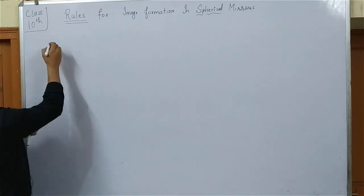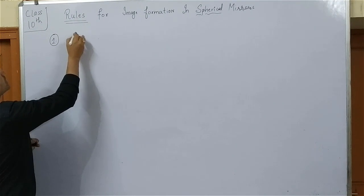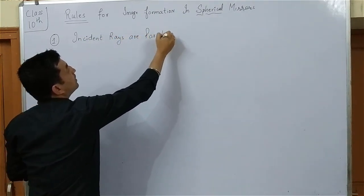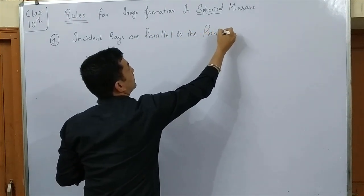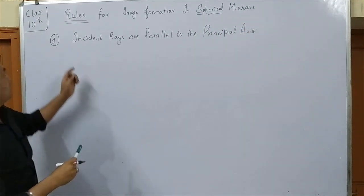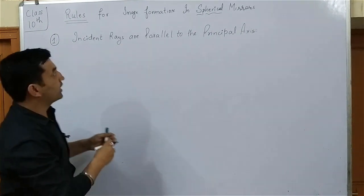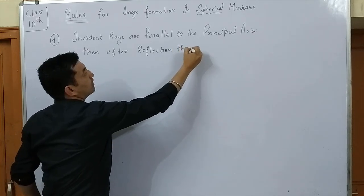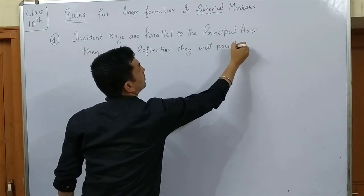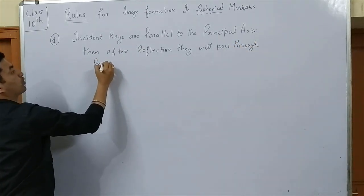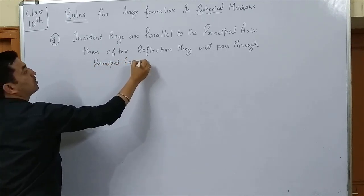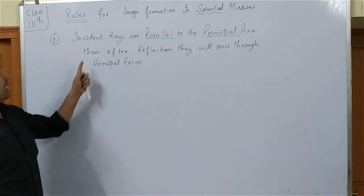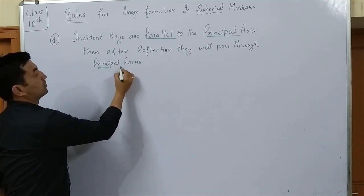Rule number 1: Incident rays are parallel to the principal axis. Then, after reflection, they will pass through the principal focus. You can see the complete rule — incident rays are parallel to the principal axis, and after reflection they will pass through the principal focus.